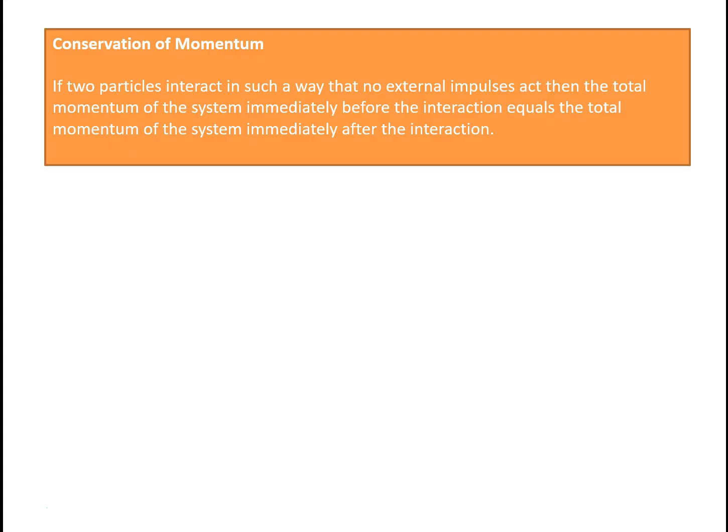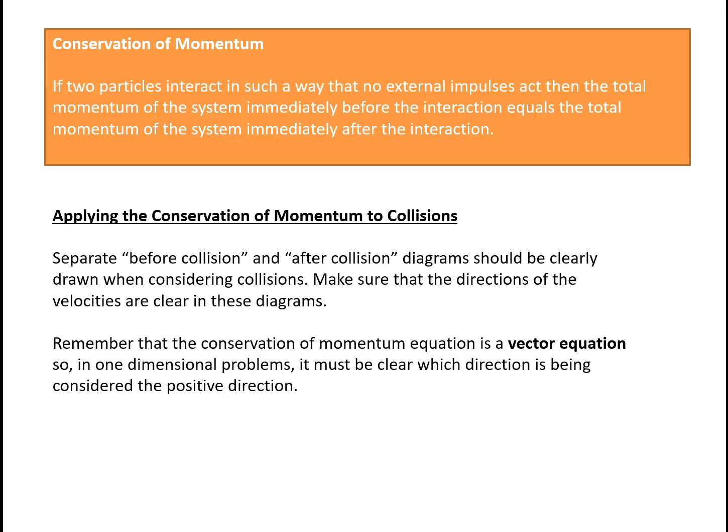Conservation of momentum: if two particles interact in such a way that no external impulses act upon them, then the total momentum of the system immediately before the interaction equals the total momentum immediately after. When applying conservation of momentum to collisions, it's important that we draw separate before and after collision diagrams, make clear which direction velocities are in, and define the positive direction since conservation of momentum is a vector equation.